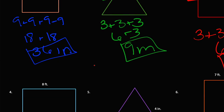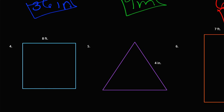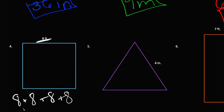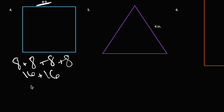So let's move on to our next problem. Here we have another square — this one is 8 feet. Since there are four sides and each side is the same, we can do 8 plus 8 plus 8 plus 8. 8 plus 8 is 16, and 16 plus 16 is 32, so our perimeter would be 32 feet.